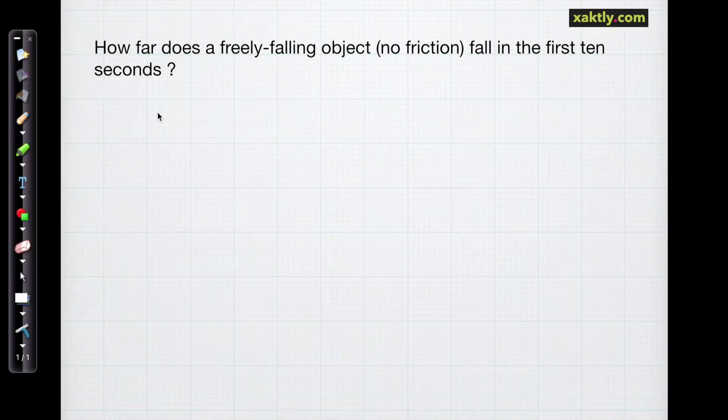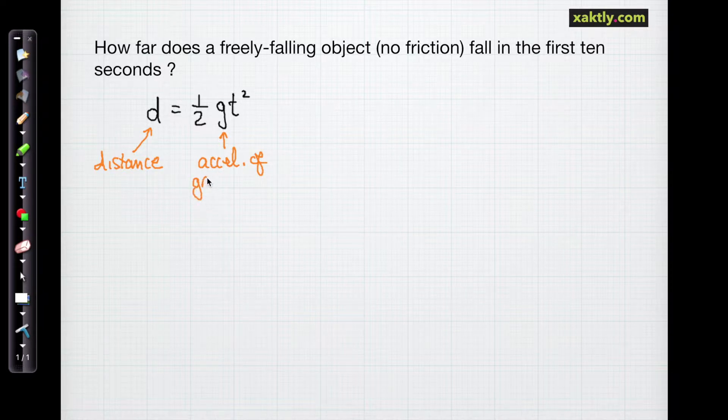Hey everybody. Let's use the free fall formula to solve a couple problems involving freely falling objects. So the distance formula that we use is distance is 1/2 gt² where d is the distance and we use meters. g is the acceleration of gravity on earth. That could change depending on what planet you're on. And that's 9.81 meters per second squared. And our time will be given in seconds.